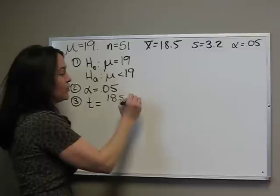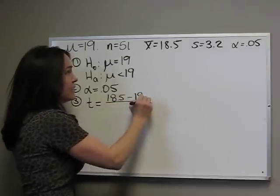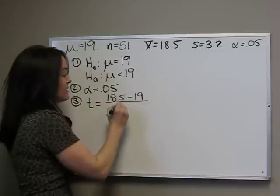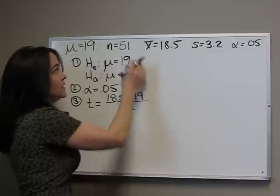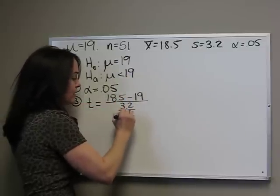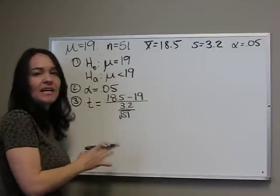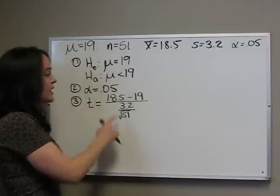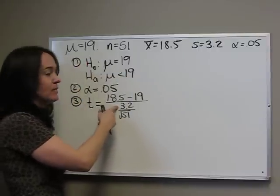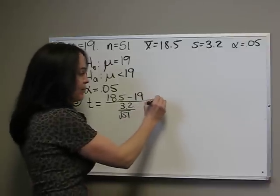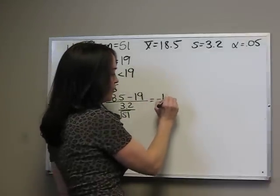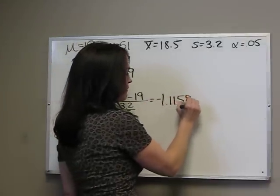minus mu, 19, divided by S this time, 3.2 divided by the square root of 51. So remember, it's the same basic idea as our z-score. Instead of sigma, we use S. To four decimal places, that is negative 1.1158.